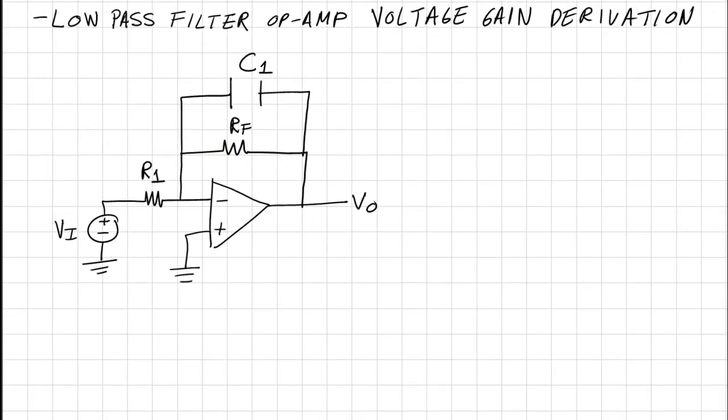If you notice, this one almost looks like an inverting amplifier except for that capacitor C1. So what we can do to make it look like an inverting amplifier is replace that capacitor with its impedance and then combine it in parallel with RF.